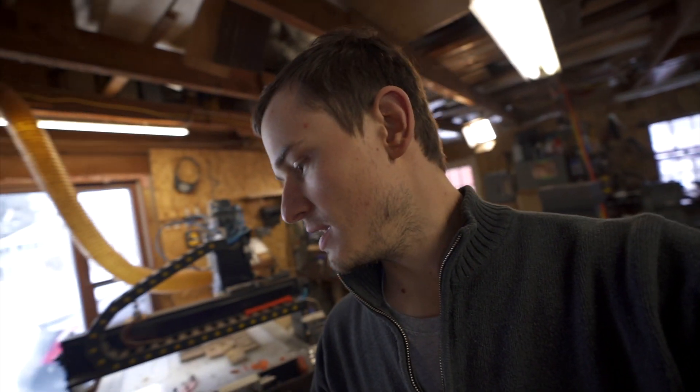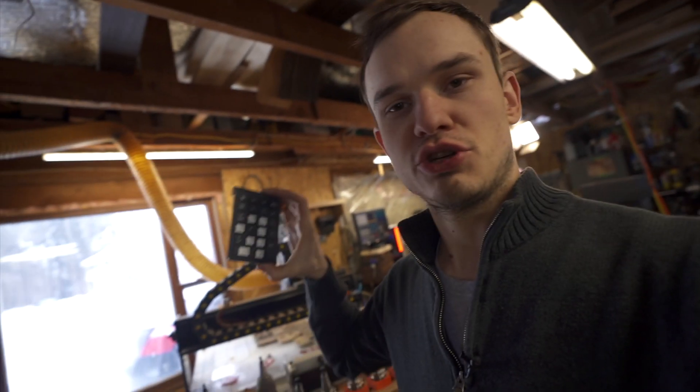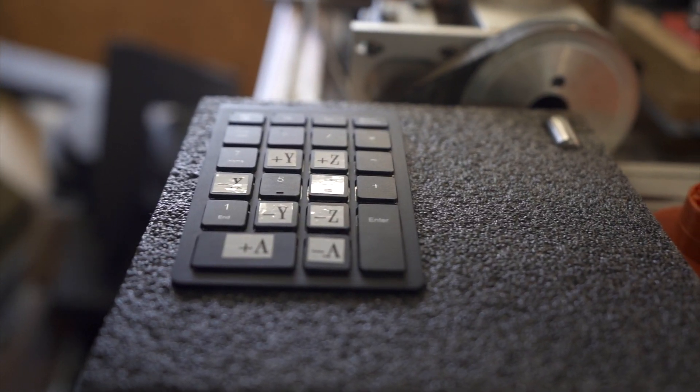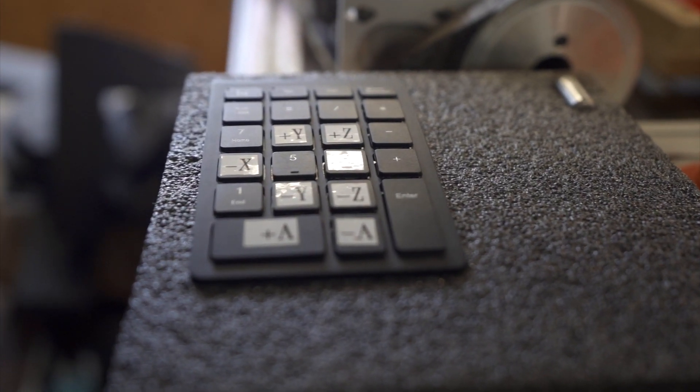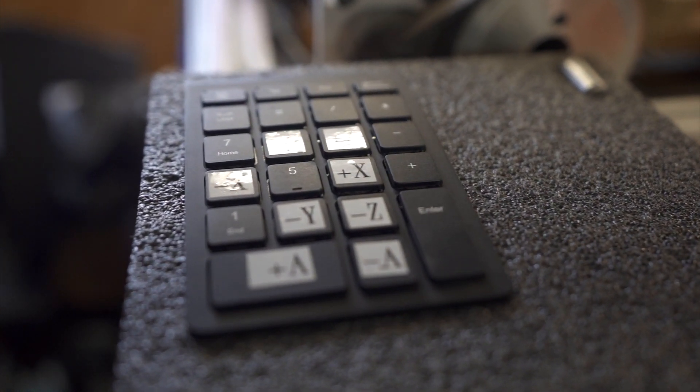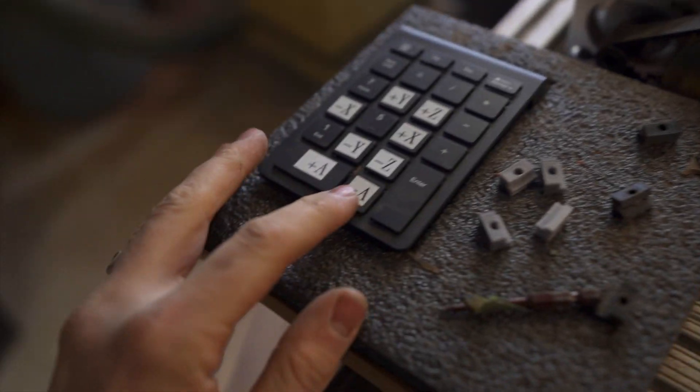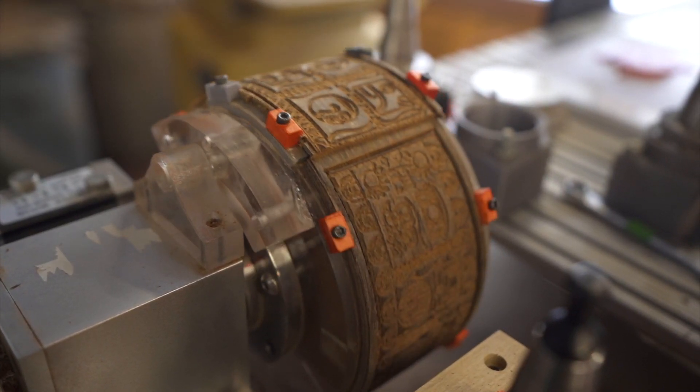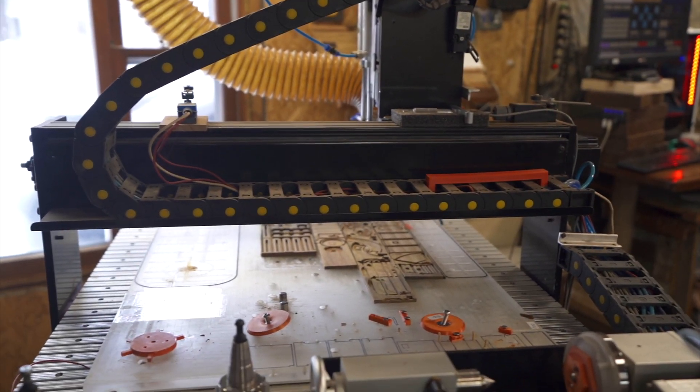Tip number one is, at least with my machine, you can buy a number pad and you can control the CNC just via a USB connected number pad. So say I want to take parts off the fourth axis, I can just move it right here with the click of a button. And I can move my machine out of the way. If it's in my way, I can move it wherever I want to.